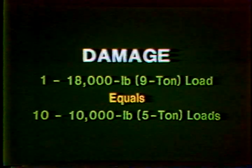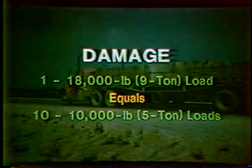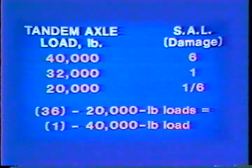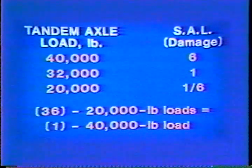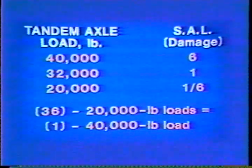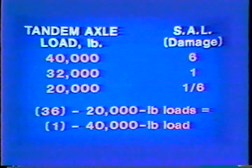The chart shows that the damage a truck causes increases very rapidly as axle weight increases — much faster than the loads increase. For instance, one nine-ton axle causes about ten times more damage than a five-ton axle. A tandem axle has eight tires arranged on two axles, one in back of the other under the truck. A 32,000-pound load is the legal maximum for a tandem axle. A 20,000-pound tandem axle is only about one-sixth as destructive as a 32,000-pound tandem axle. An overweight tandem axle carrying 40,000 pounds causes six times the damage of a legal 32,000-pound tandem axle and 36 times the damage of a 20,000-pound tandem axle load.